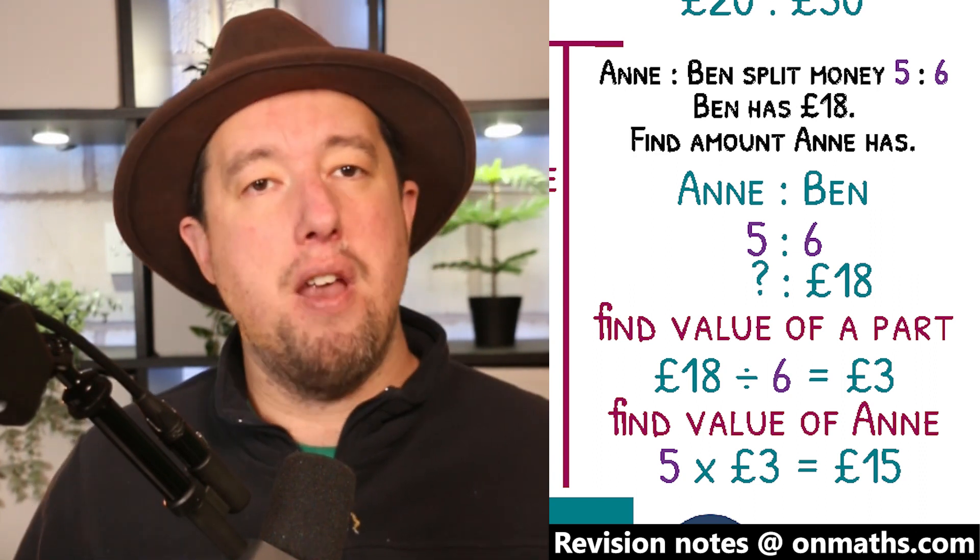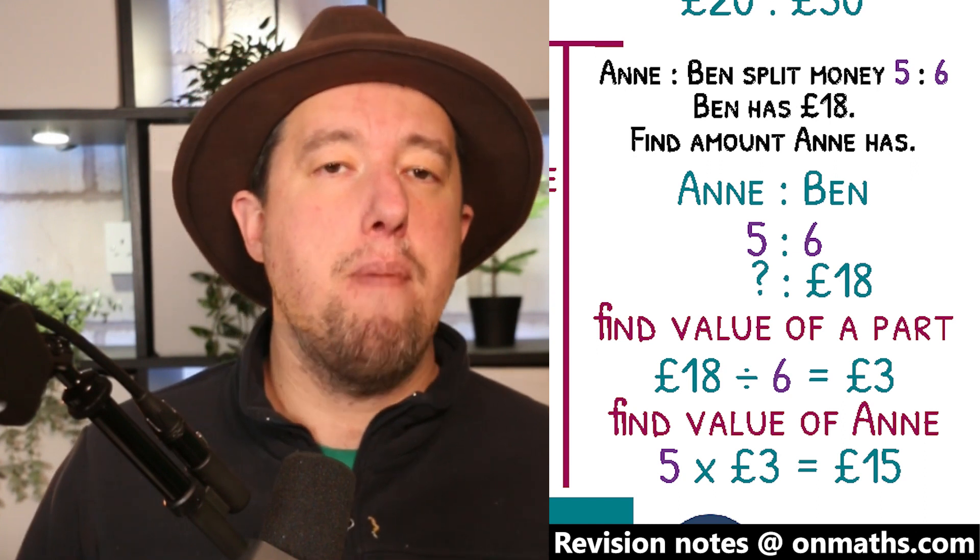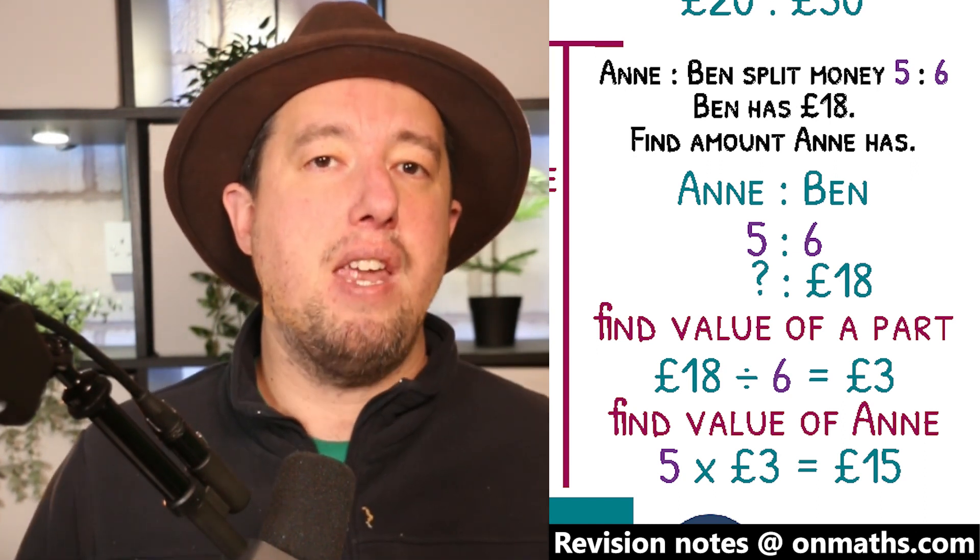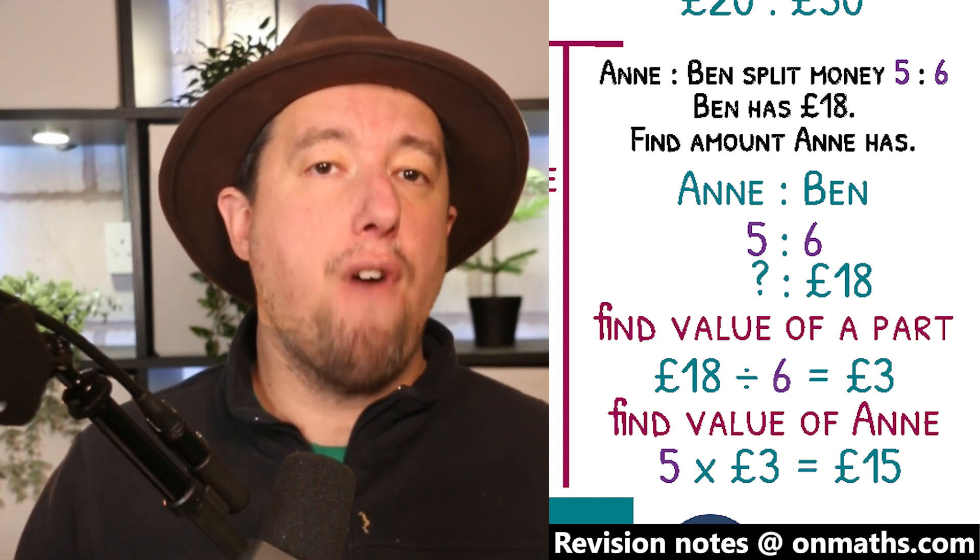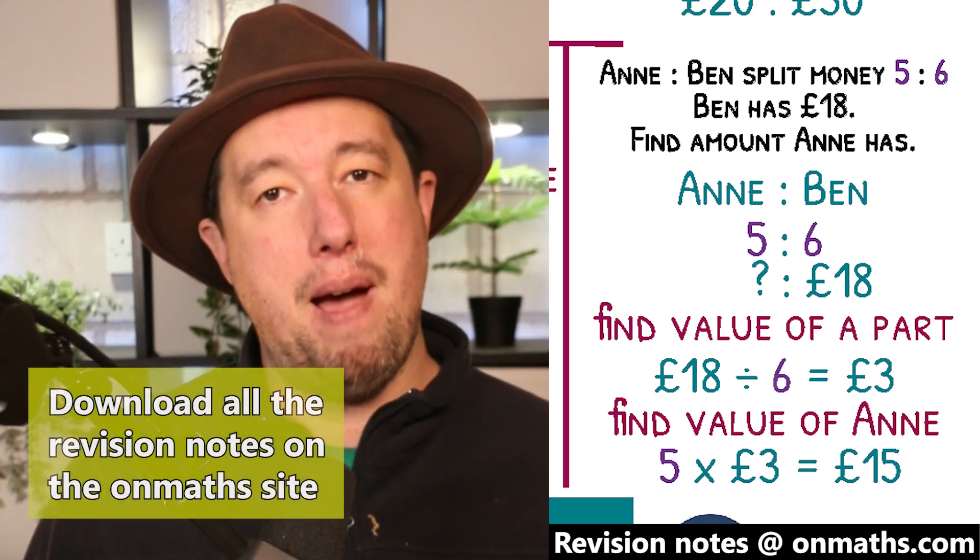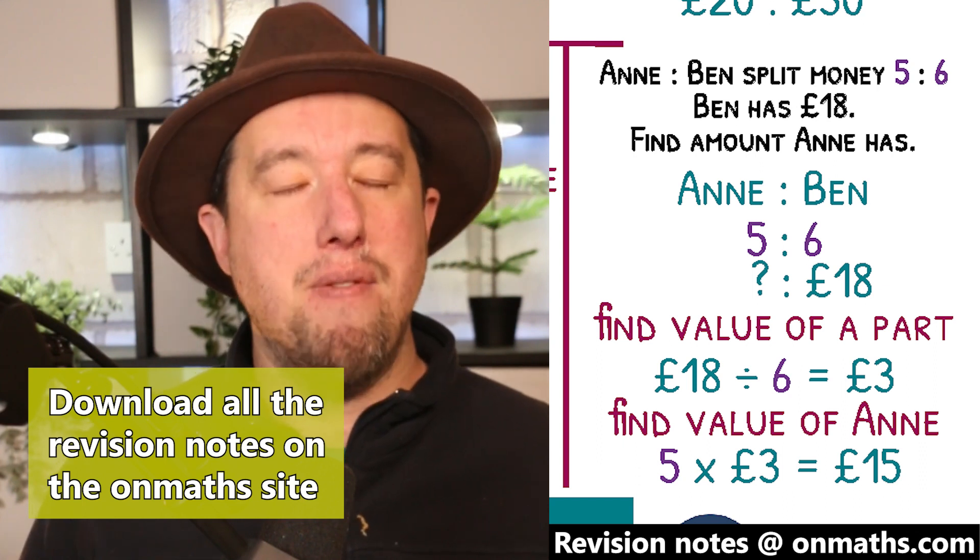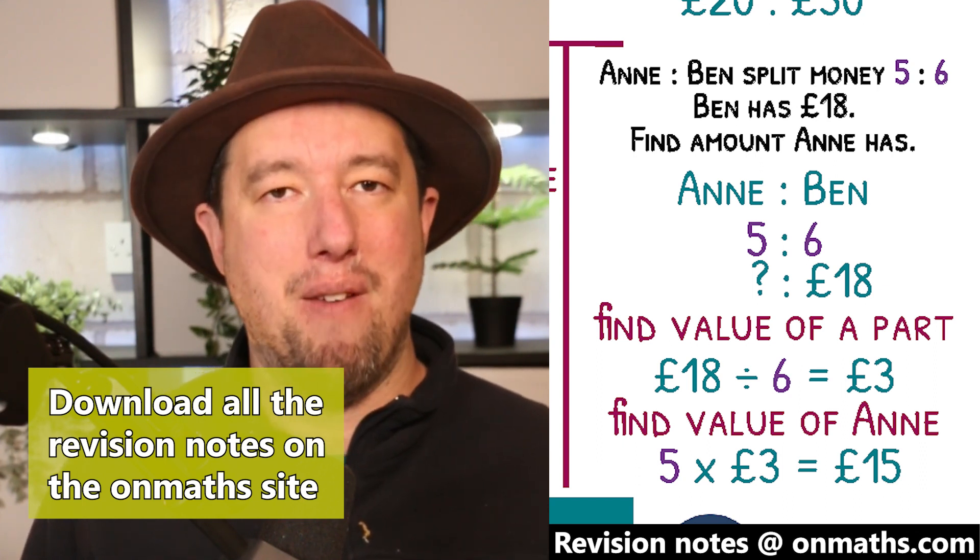£18 divided by 6 gives us £3 in each of Ben's boxes. The boxes in ratios always have the same amount, so Anne's 5 boxes will each have £3 in. 5 times £3 is £15. Anne has £15.